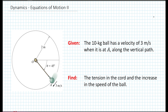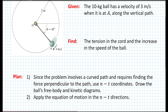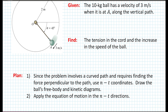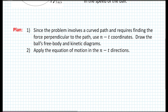In our next example, a 10 kilogram ball has a velocity of 3 meters per second when it is at point A along the vertical path. We're asked to find the tension in the chord and the increase in speed of the ball. Since the problem involves a curved path and requires finding the force perpendicular to the path, we use NT (normal-tangential) coordinates, draw the free body and kinetic diagrams, then apply the equations of motion.